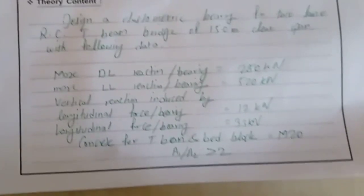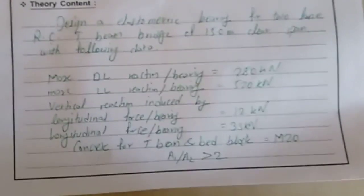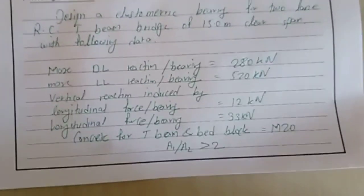To begin with design of elastomeric bearing, here we are taking the problem: the design of elastomeric bearing for a two-lane reinforced concrete T-beam bridge of 15 meter clear span with following data. Maximum dead load reaction per bearing is 280 kN.